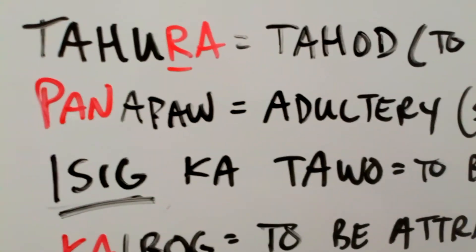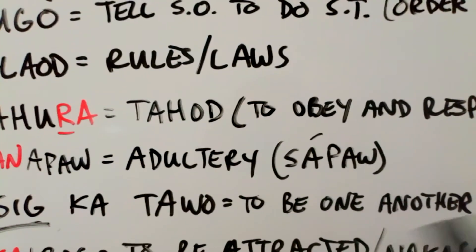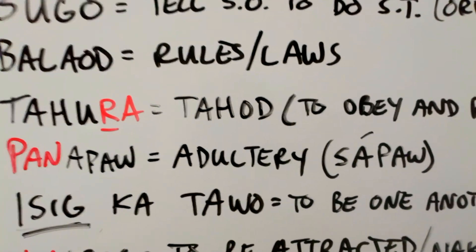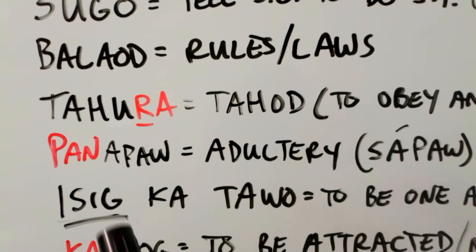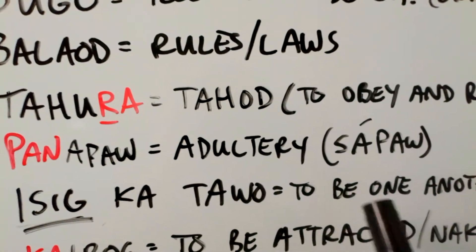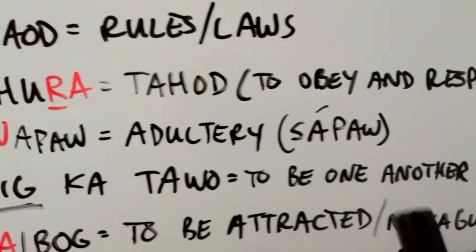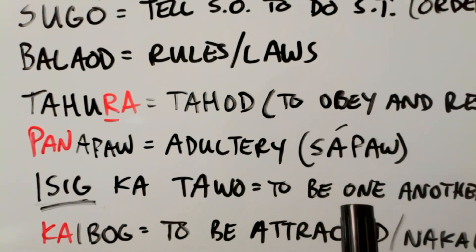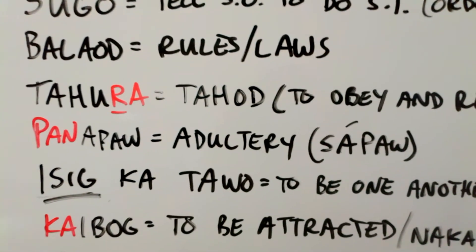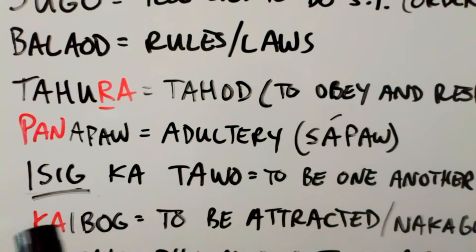Our next word is panapau, and panapau means to commit adultery. The root word for panapau is sapau. Panapau, sapau — that second 'a' gets the stress. If we affixate it with 'pa,' it changes. We talked about the morphological process of changing 'sa' to an 'n' ending. Panapau is adultery. The note you need to know, though: even though sapau is the root word, sapau has a completely different meaning — it has nothing to do with adultery. But when this word is affixated and conjugated with 'pa,' the word becomes adultery: panapau.